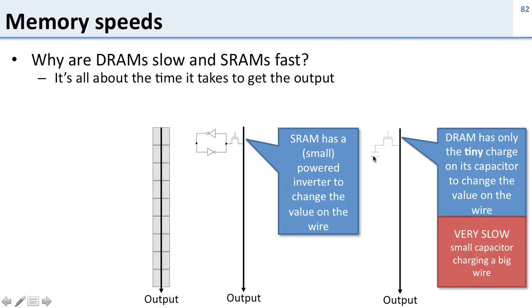So this is very slow. If you look at the circuit here, this is a teeny little capacitor charging a big wire. And when you have a big wire, the wire itself has a lot of capacitance and resistance, so it takes a long time to charge it up. And that's why these are slow and fast. SRAM can push out lots of electrons through this powered inverter, whereas DRAM just has the electrons that are left in this capacitor to put out onto the wire.